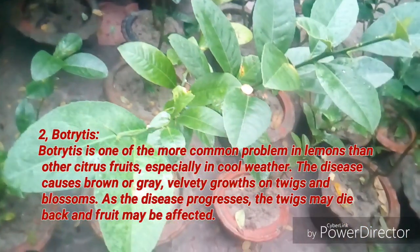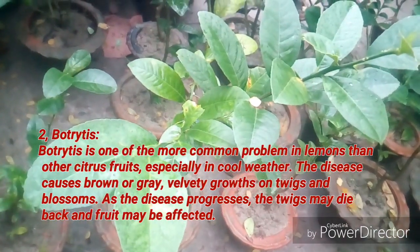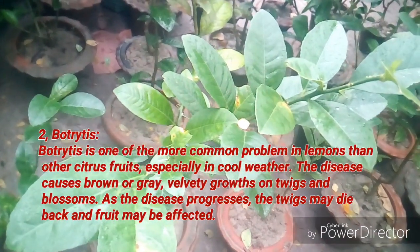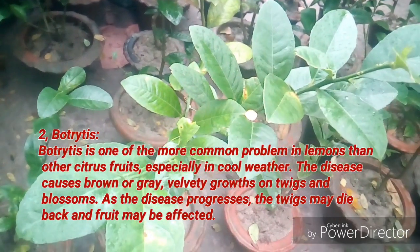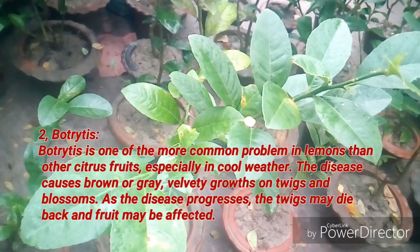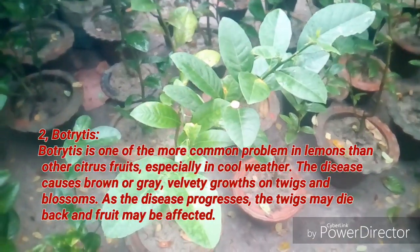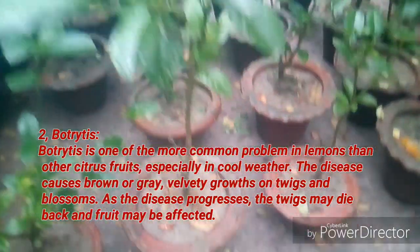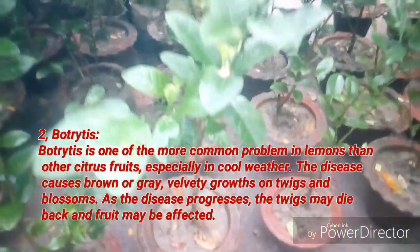Botrytis is one of the more common problems in lemons than other citrus fruits, especially in cool weather. The disease causes brown or grey velvety growths on twigs and blossoms. As the disease progresses, the twigs may die back and fruit may be affected.